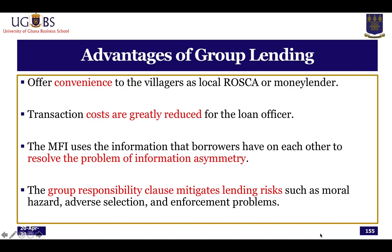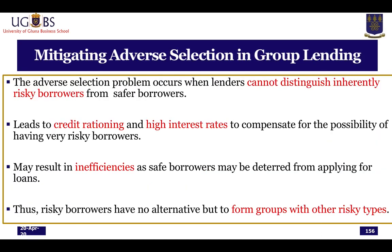The adverse selection problem usually occurs because lenders are not able to tell risky borrowers from safe borrowers at the very outset. This leads lending institutions to try to ration their credit or charge high interest rates to compensate for the possibility of having very risky borrowers who are likely to default. When they do this, safe borrowers who should not be charged high interest rates are deterred from applying for loans, resulting in inefficiency.